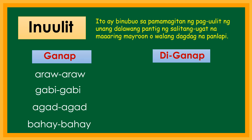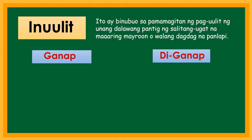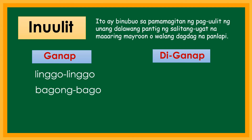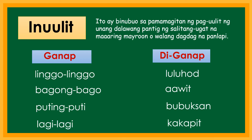Ang di-ganap naman ay bahagi lamang ng salita ang inuulit. Halimbawa: aalis, lalakad, aakyat, kakain. Iba pang halimbawa ng inuulit: linggo-linggo, bagong-bago, puting-puti, lagi-lagi, luluhod, aawit, bubuksan, kakapit, inuulit.